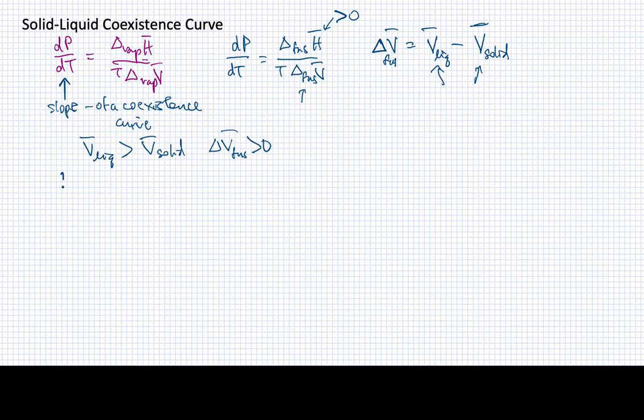So that means we're going to have a positive slope when we look at the coexistence curve between solid and liquid. Now I'm going to draw a quick phase diagram here. Here's the triple point. We're going to go up to the critical point. And now for the solid liquid, if it's got a positive slope, and I've exaggerated it here, if it has a positive slope, then it's going to be leaning to the right. So it's going to look something like that.